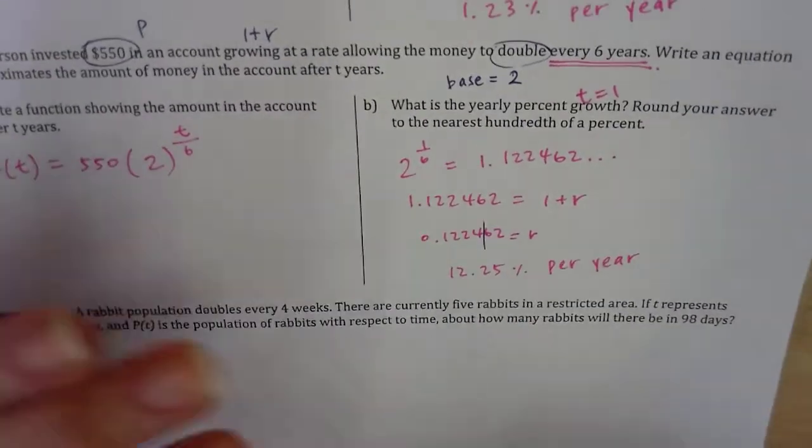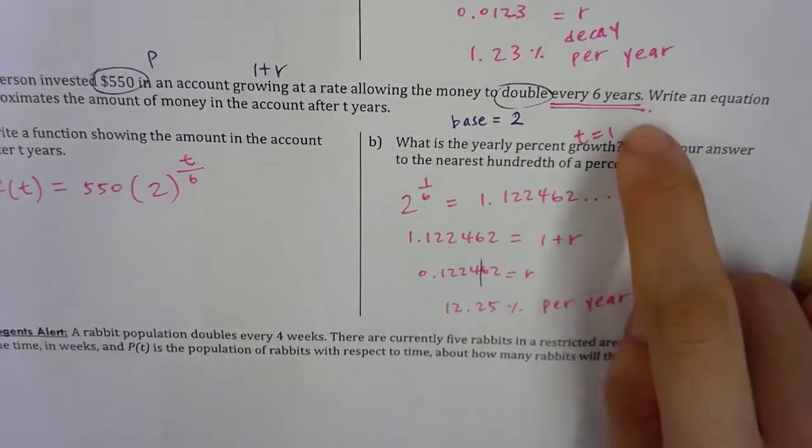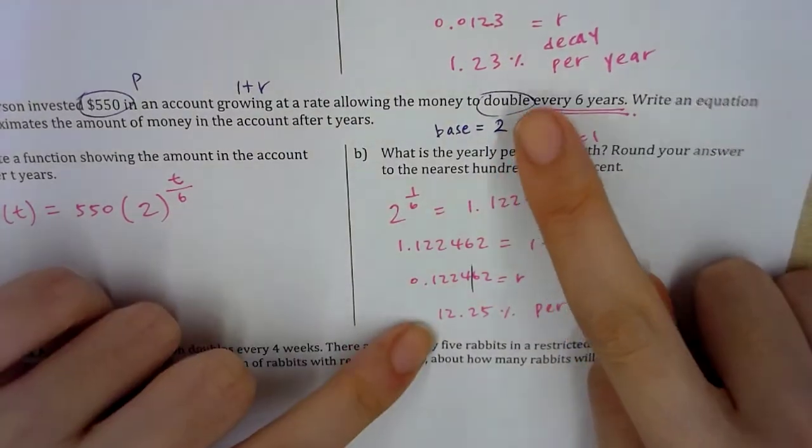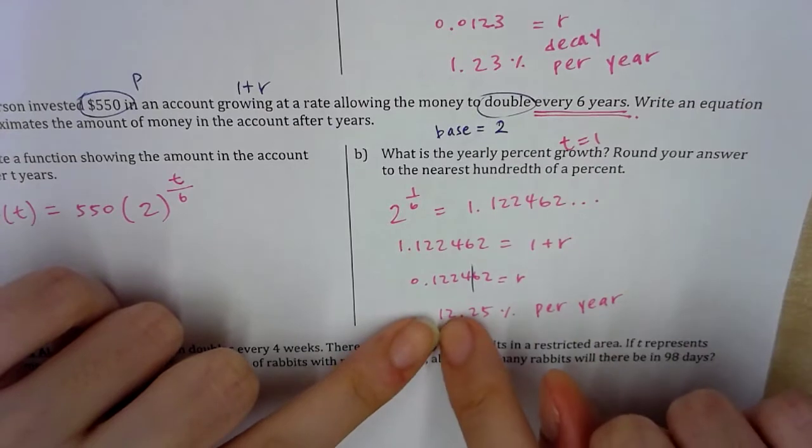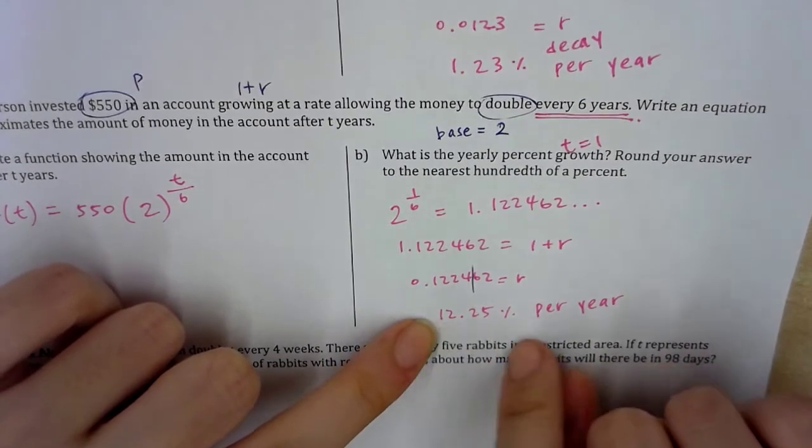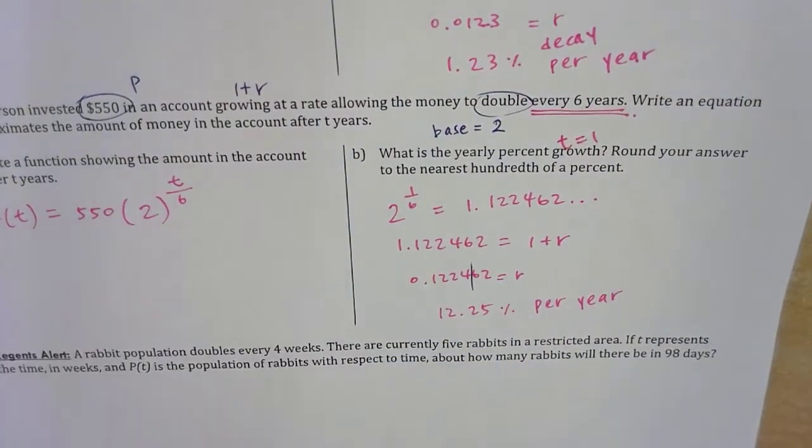So again, it does make sense, right? Because every six years, I'd be able to double it, grow it by 100%. So every year, it must be smaller than that. Here's one more challenge problem. Go ahead and read the problem, set up the function all by yourself.